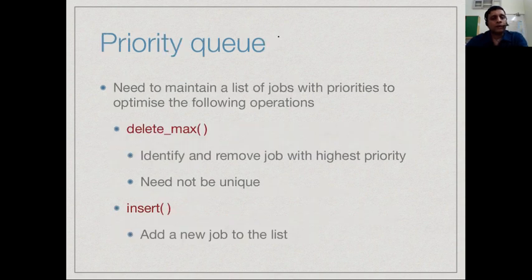This is what we call a priority queue. We have two basic operations in a priority queue. The first is to extract the next job, which means take the job with the highest priority and remove it from the queue. We have a situation where you have multiple jobs with the same priority. We do not assume that the priorities are unique. The main operation is delete max, delete the maximum priority item from the queue.